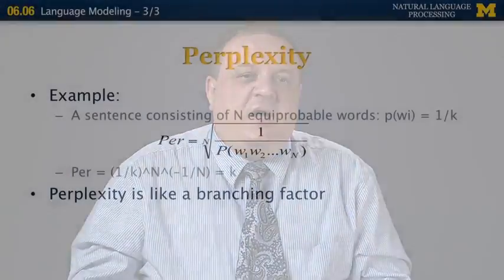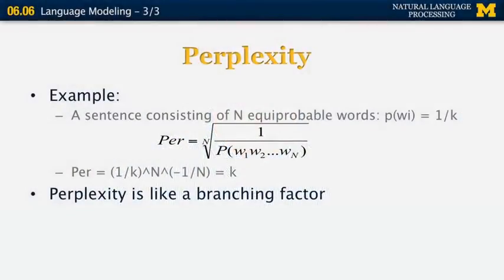So if we have 10 words to choose from, the perplexity is going to be equal to 10 if those words are equally likely. This is another way to assert that perplexity is like a branching factor.